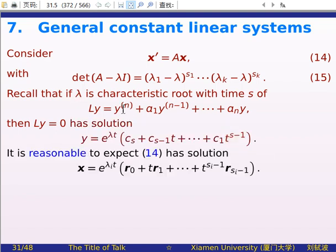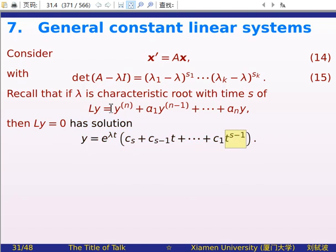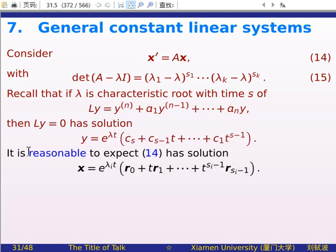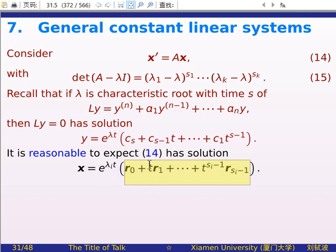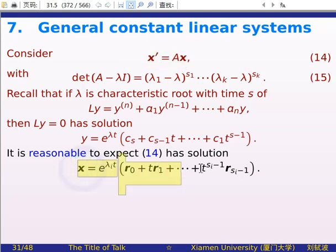It is reasonable to expect that our system should also have a solution of this form: x equals e^{lambda*t} multiplying a linear combination of t^0, t^1, ..., t^{s_i - 1}. But because x is a vector-valued function, the coefficients must be vectors — r_0, r_1, ..., r_{s_i - 1}. We expect our system will have a solution of this form, and we will now justify and prove this observation. Before this, we need an important result from linear algebra.